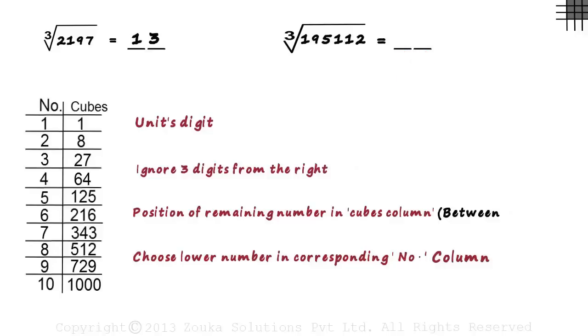Now let's see the units digit of the number. It's 2. In the cubes column, we look for a number which has its units digit 2. Yes, it's 512.